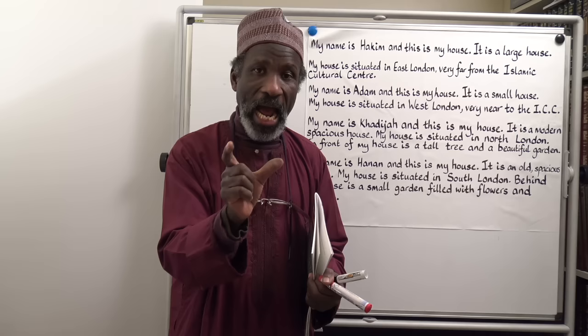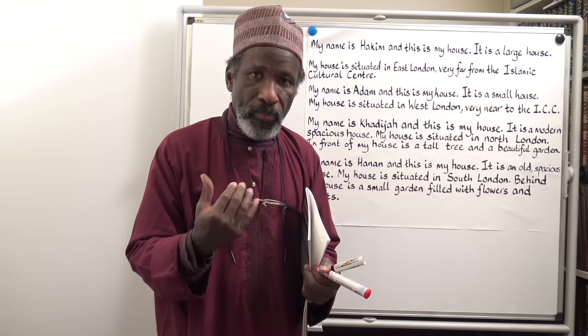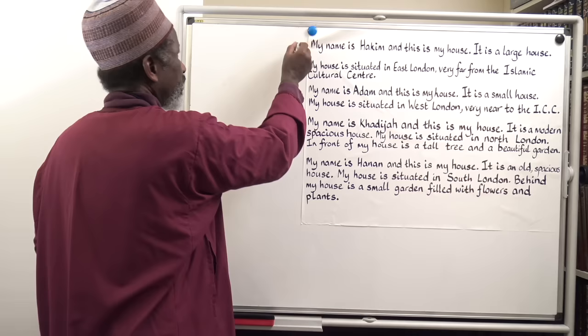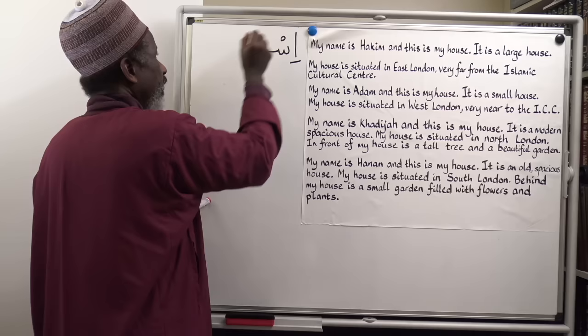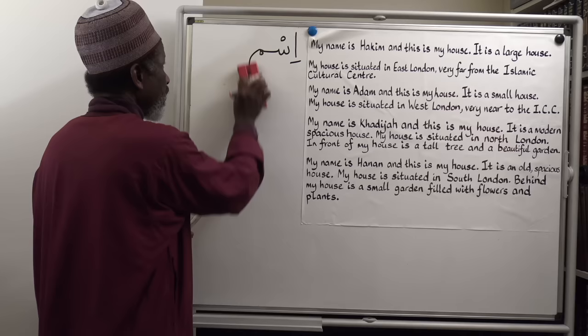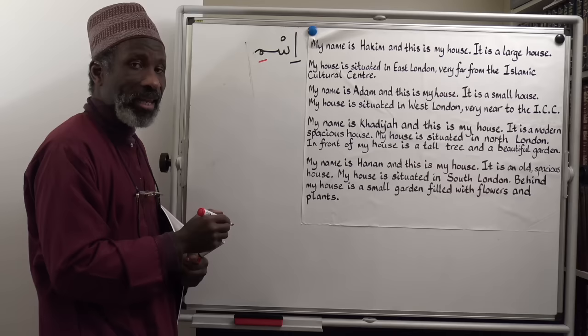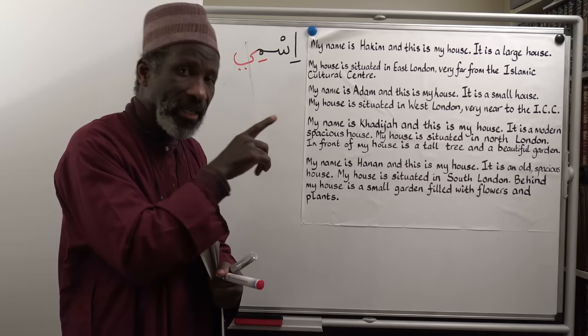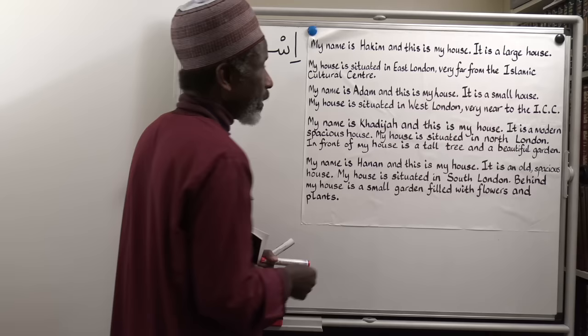My name is Ismi. In Arabic, when you have a noun such as Ismun — a name — to attribute it to yourself as a speaker, you add Kesara at the end and lengthen a yaa. It becomes Ismi. To make it 'my name,' you put Kesara underneath the last letter of that noun, then extend it with a lengthening yaa. Ismi — my name is. My name is Hakim: Ismi Hakim.